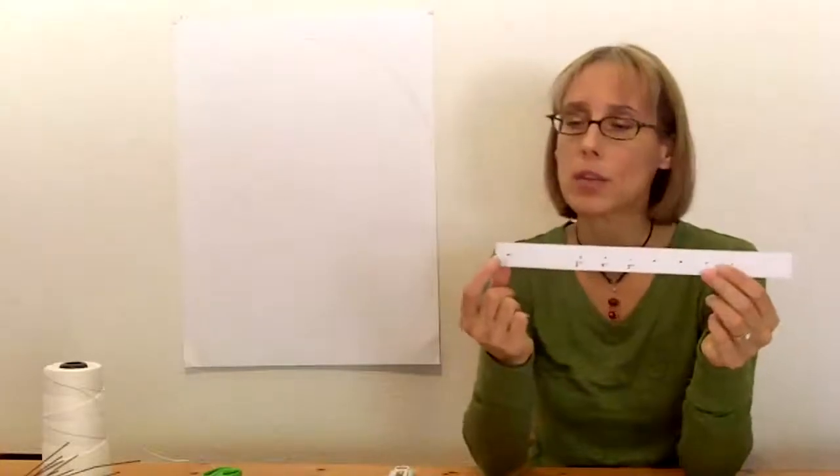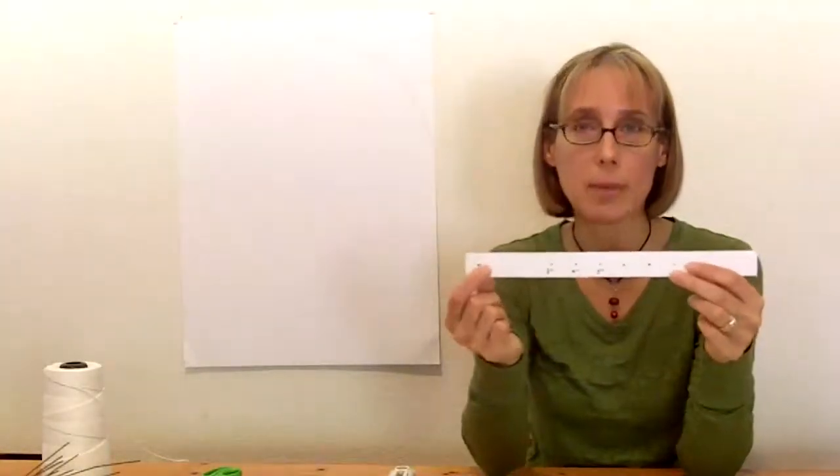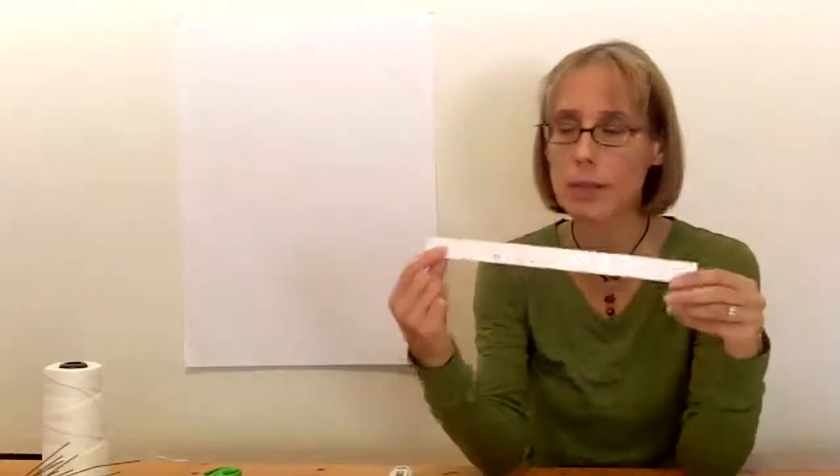So the first thing that they needed to do was to measure in half an inch and then make a mark right there, and then depending on the size of their circles, because different teams had different size targets.